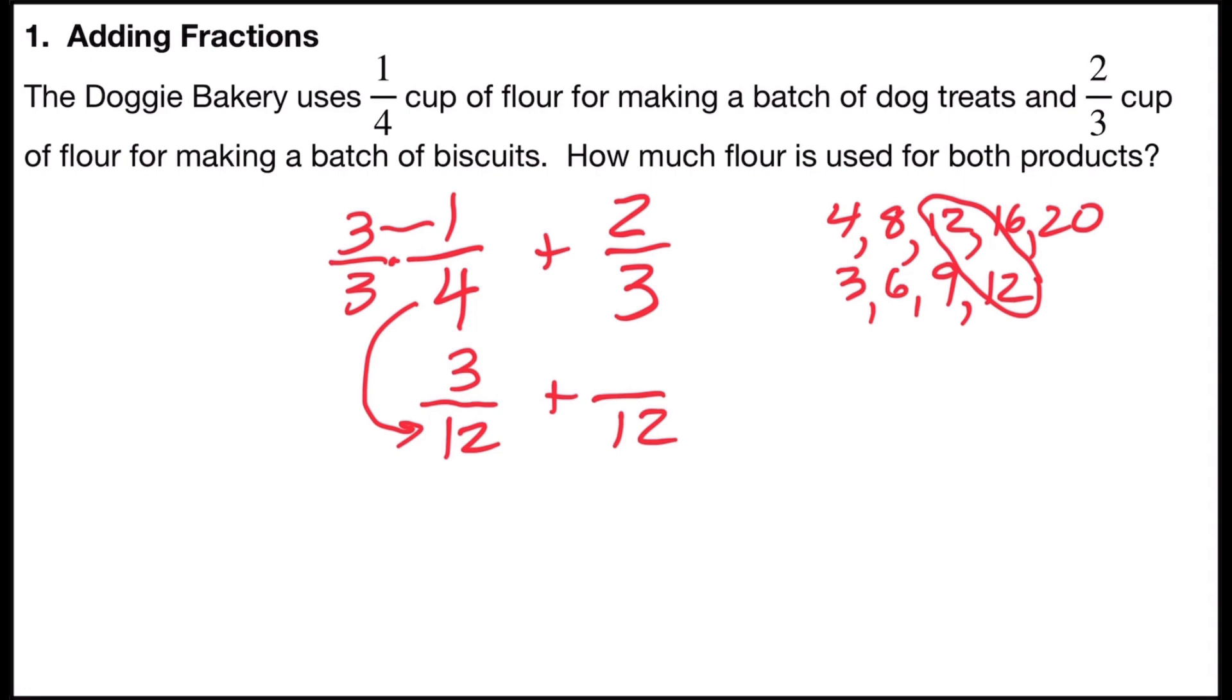to multiply by the form of one, 4 over 4. And 2 times 4 is 8. Now since I have a common denominator, or common name, all I have to do is add the numerators.